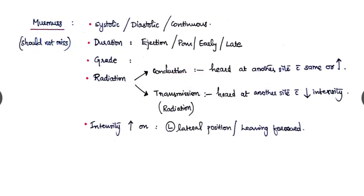Actually, it is the murmur heard at another site with the same or increased intensity. Transmission, the actual radiation of the murmur, is the murmur is heard at another site with reduced intensity. And also we have to look whether the intensity is increasing on the left lateral position or while the patient is leaning forward, etc.